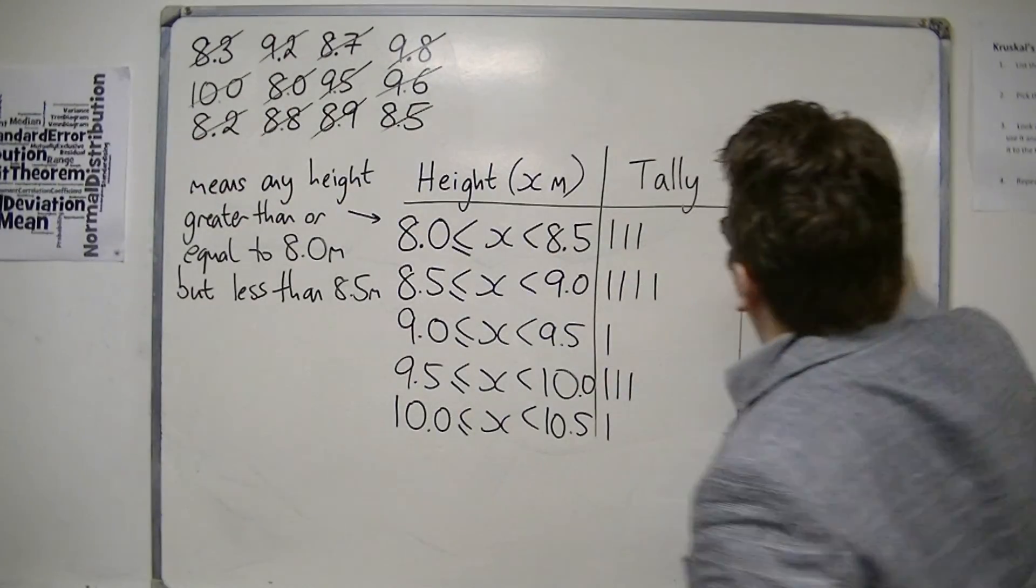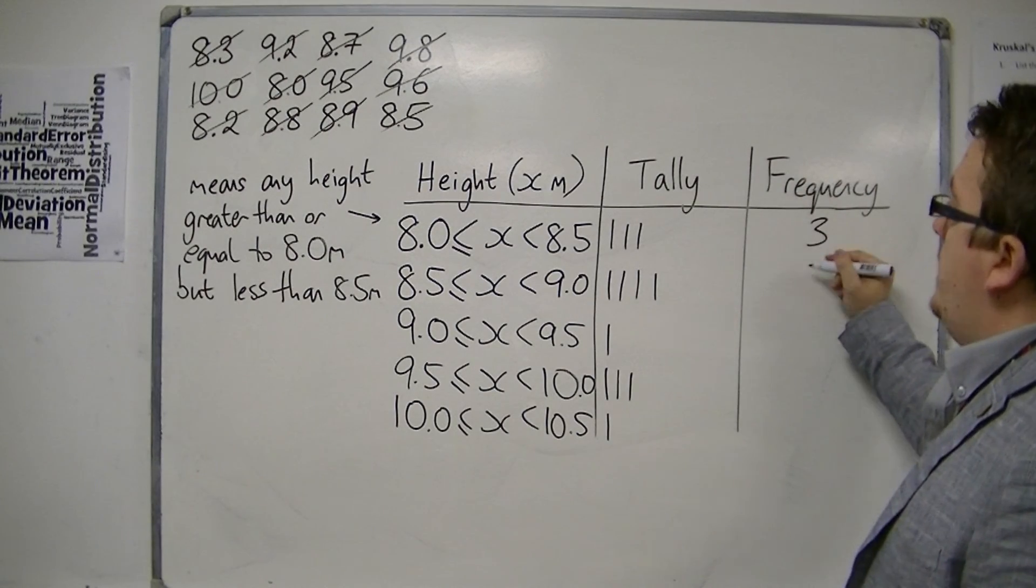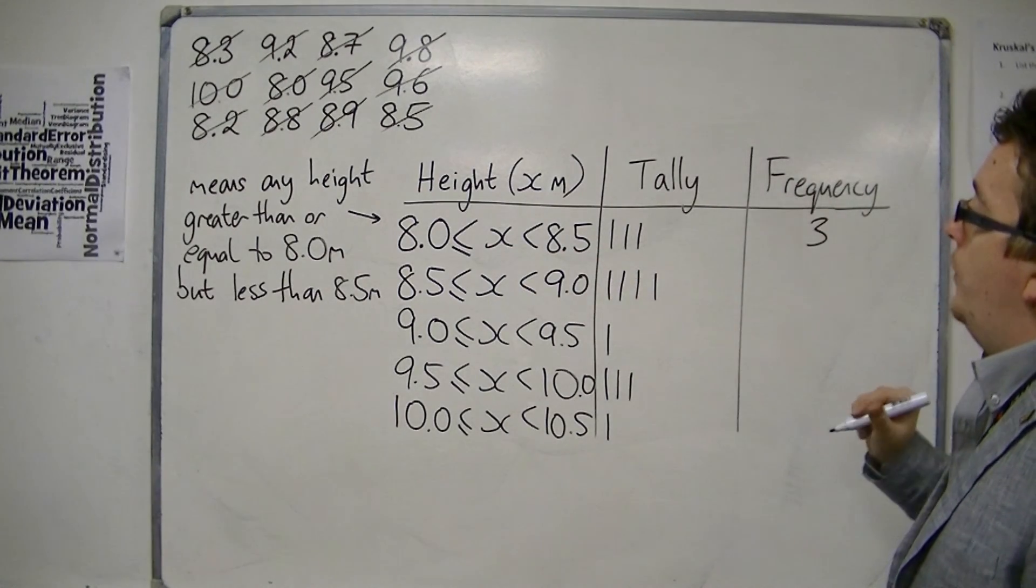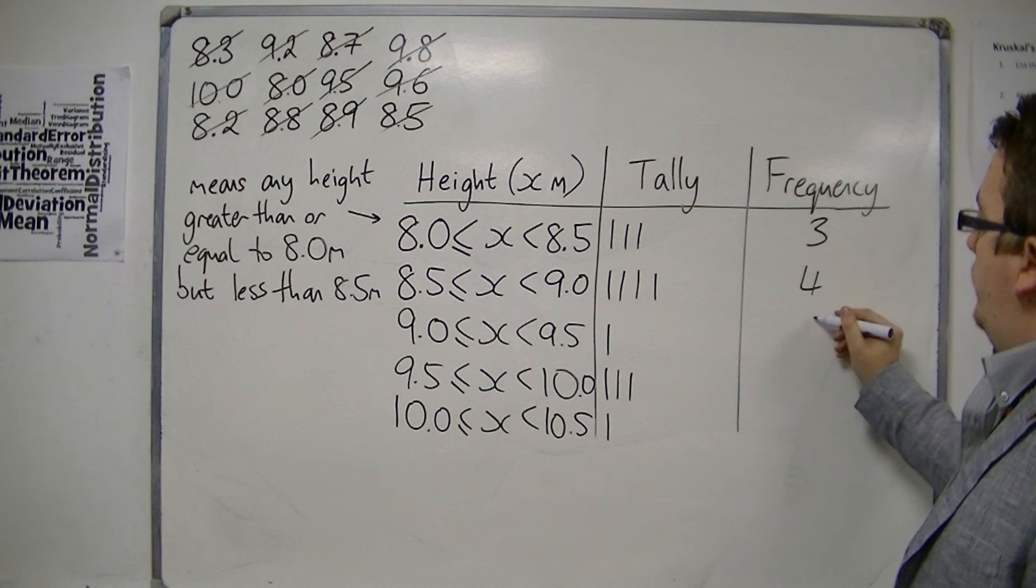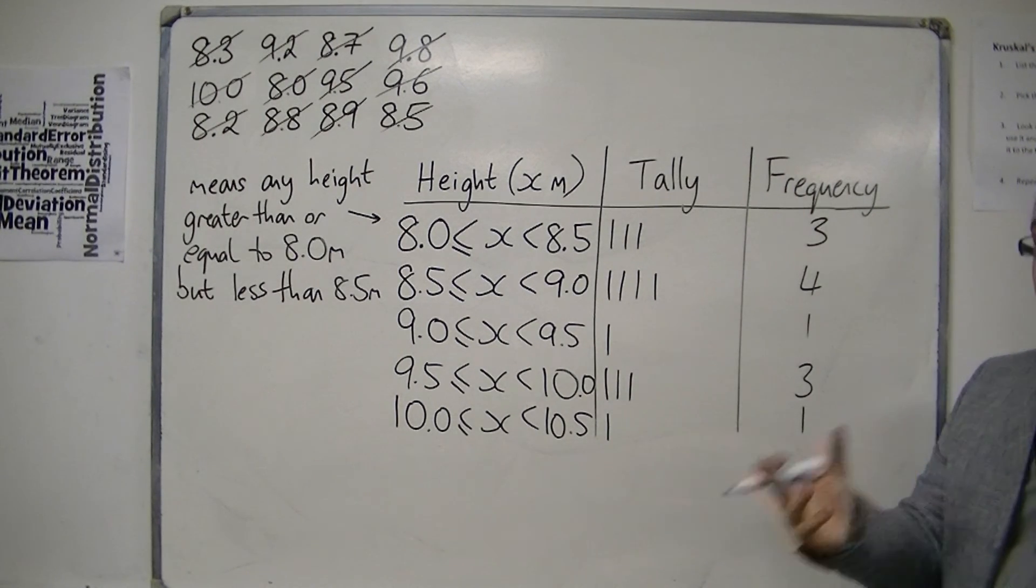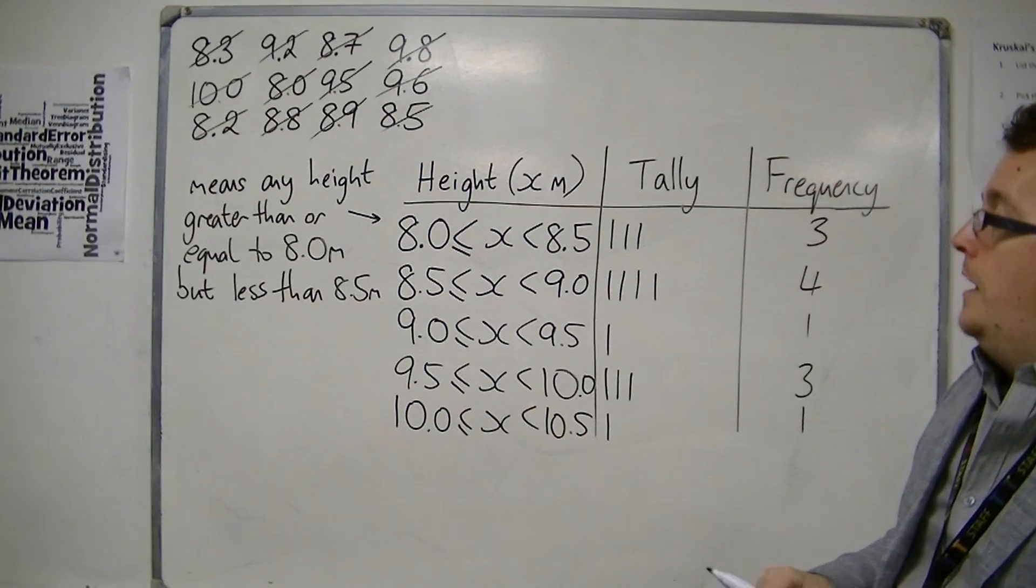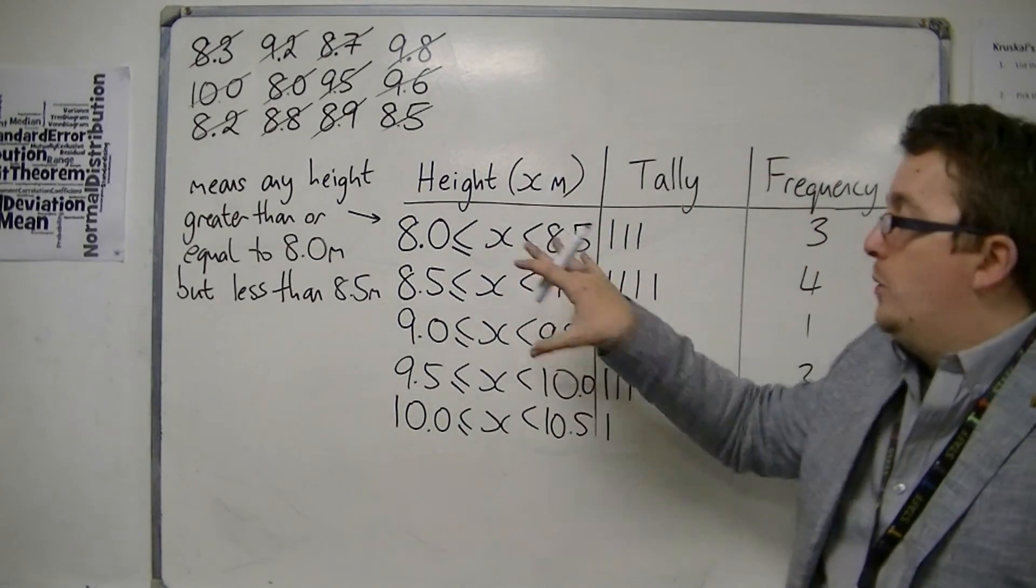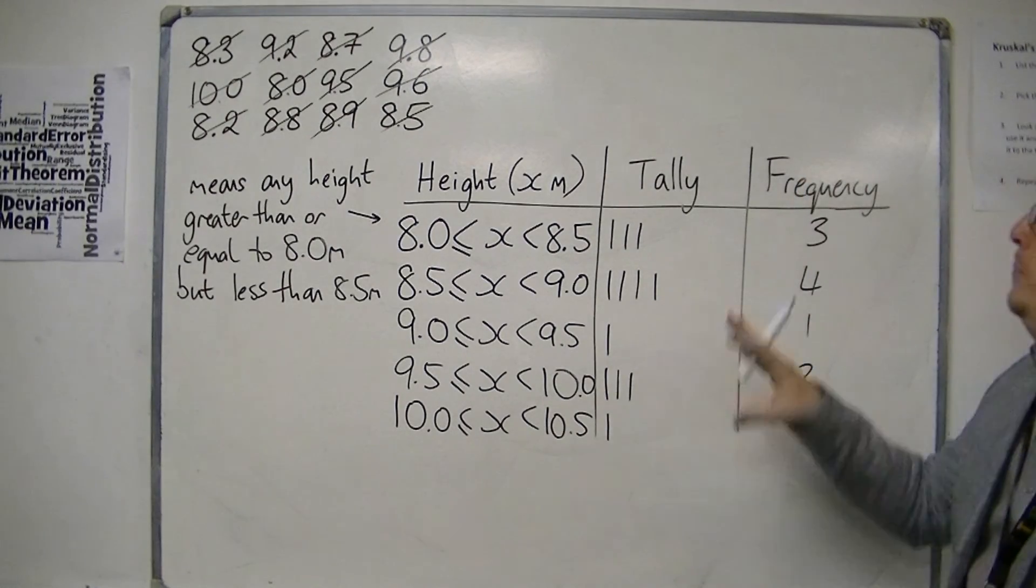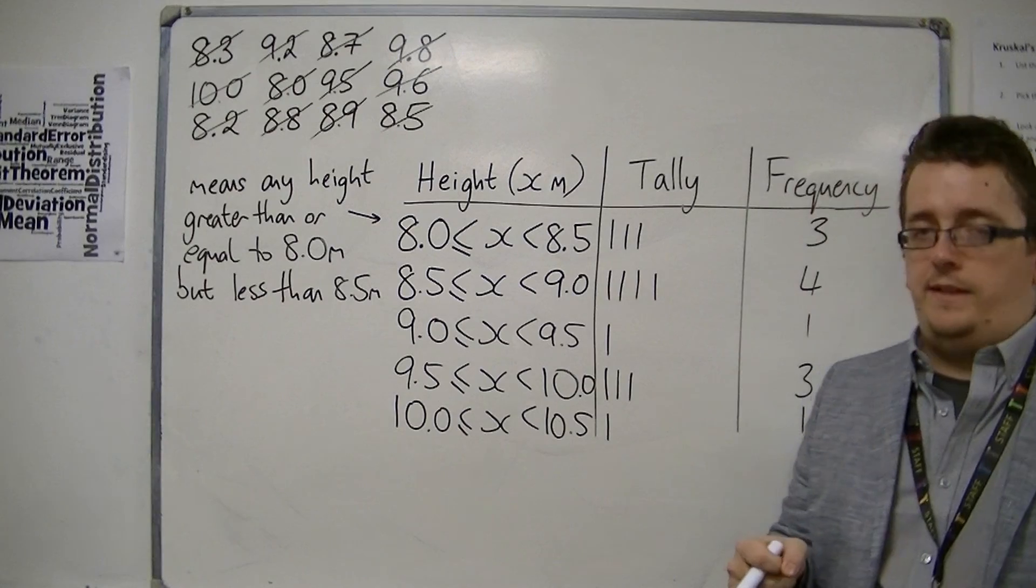And then the frequency column. Remember, frequency means how many. I've got three trees between 8 and 8.5 metres, four trees there, one there, three there, and one there. That is how you could group together this information into a grouped table, build the tally, and then we could represent that data later.